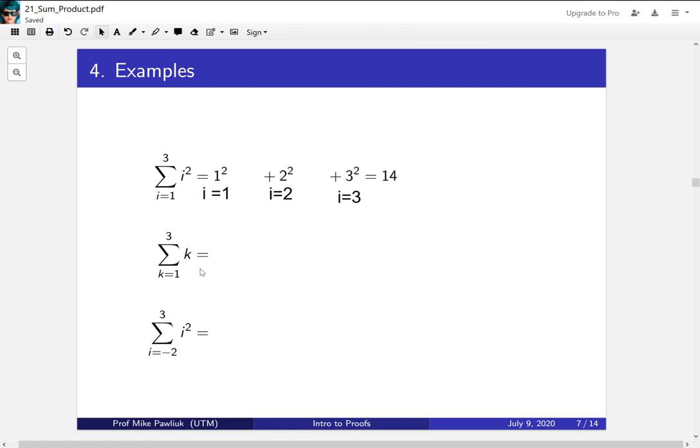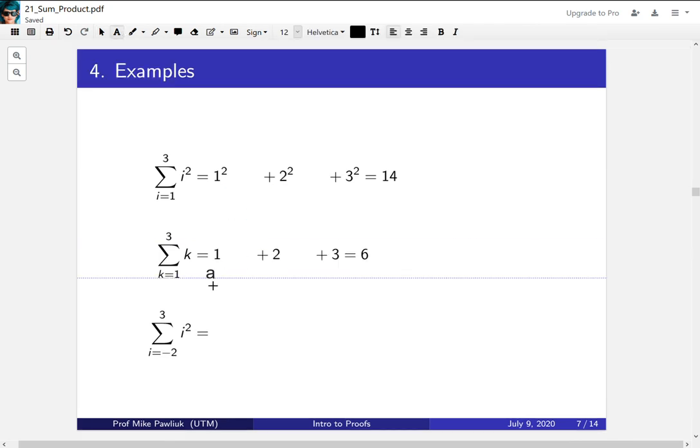Now let's go to our next example. This is the sum from k equals 1 to 3 of k. Here we're using k as our dummy variable instead of i, but the actual name of the dummy variable doesn't matter. So again, let's add this up for k equals 1, 2, and 3. So this first one is k equals 1. Second one is k equals 2. And the third one is k equals 3. In this case, the function is very simple. The term is very simple. So this is 1 plus 2 plus 3, which is 6.